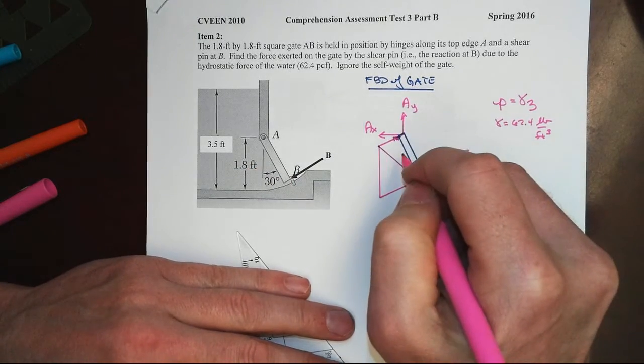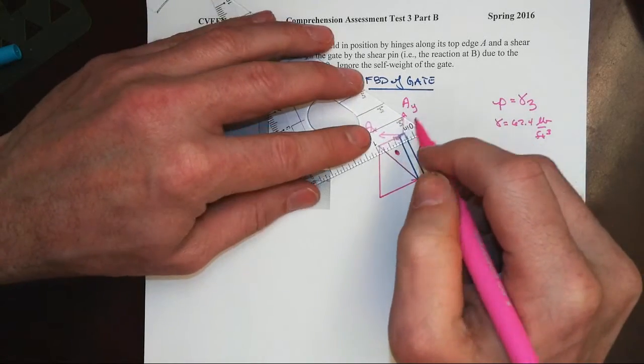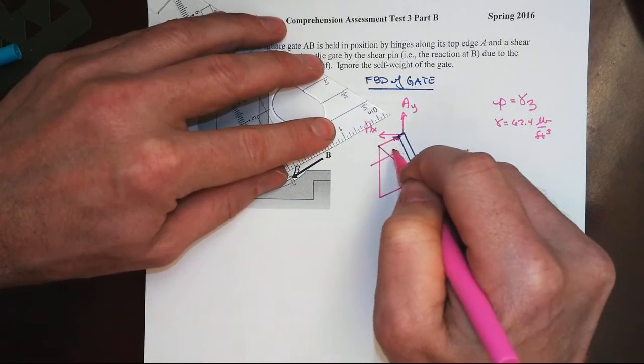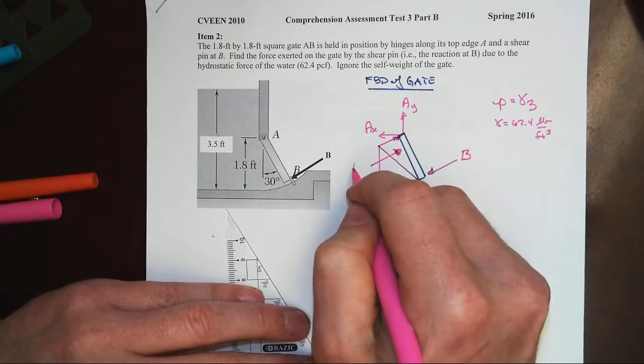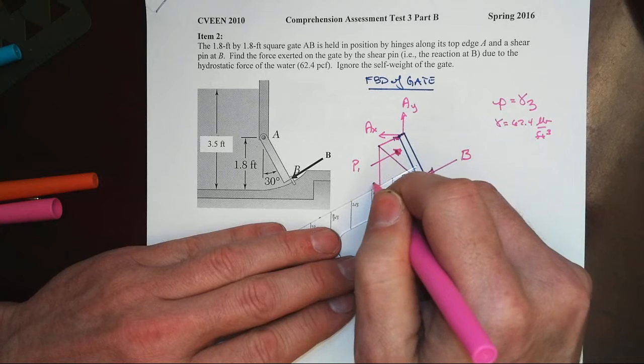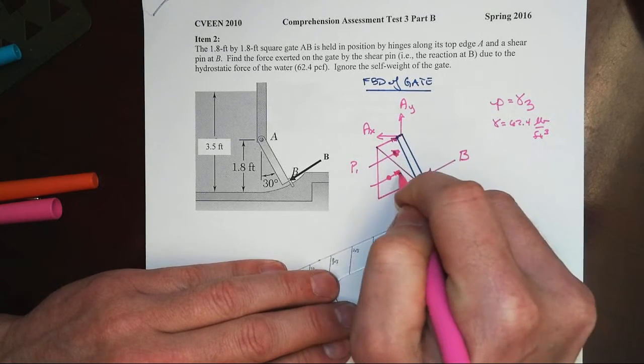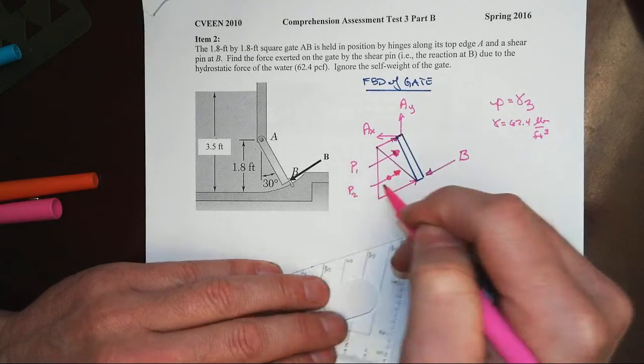And with a trapezoid, it can be convenient to cut that into two different shapes, two different triangles, and so we have this first resultant there acting at the third point of that triangle, and then the second one acting at the centroid of that triangle, call that force number two.